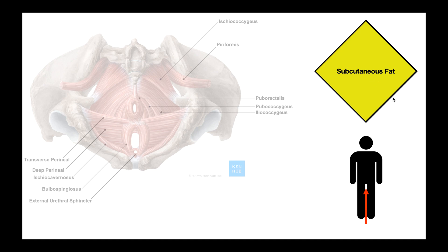So we're going to peel off the skin figuratively, going superiorly and getting deeper. That exposes the subcutaneous fat. If we go a little bit deeper, a little bit more superior, we'll get to our first layer of fascia — that's our Colles' fascia. And then if we peel that off and go a little bit more superior and deeper, we get to the superficial perineal fascia. Up to this point, we haven't seen any muscles. Once we peel off the superficial perineal fascia and go a little bit superior and deeper, we're going to get to our first layer with actual muscles.